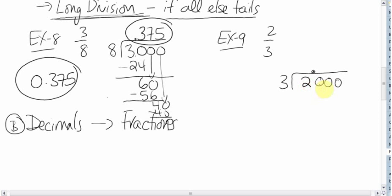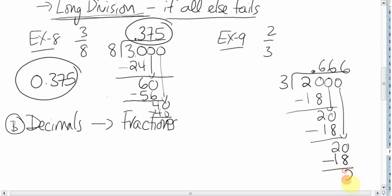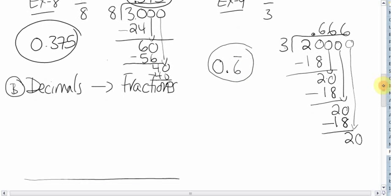3 goes into 20 six times. 6 times 3 is 18. When you subtract, you get 2. Bring down a 0. 3 goes into 20 six times, 6 times 3 is 18. You subtract, you get 2. Bring down a 0. 3 goes into 20 six times. Hey wait a minute, I see a pattern developing here. This is going to go on forever and ever. So this 6 is going to repeat forever. To show that 6 goes on forever, you draw a line over it. So it's 0.6 repeating forever.